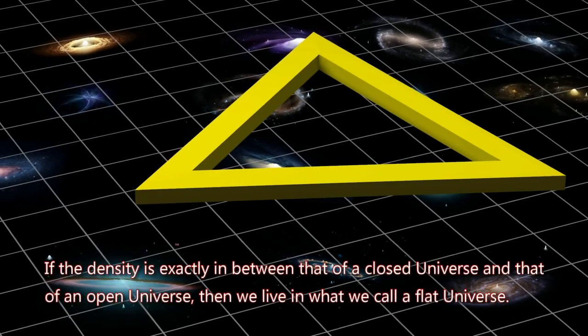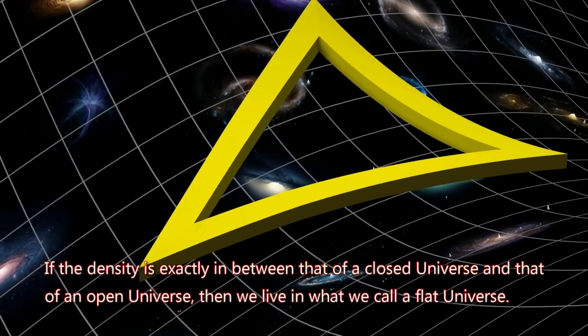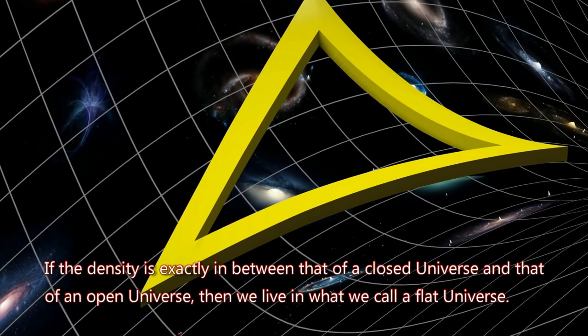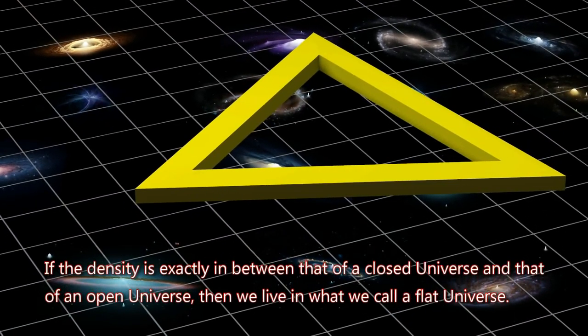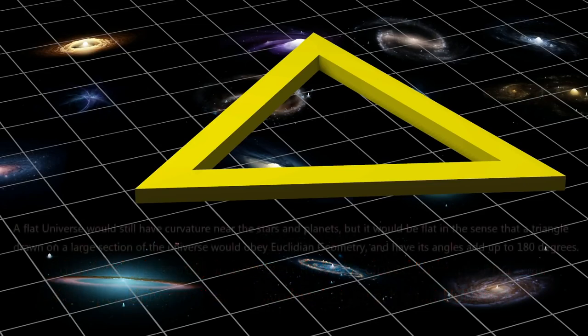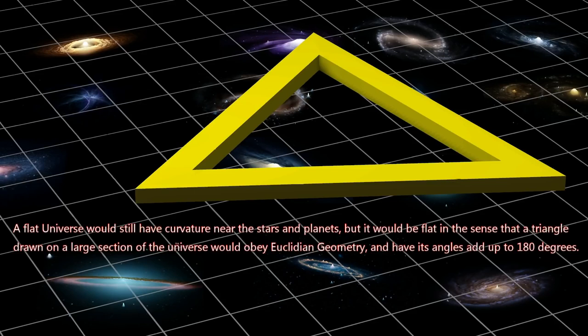If the density is exactly in between that of a closed universe and that of an open universe, then we live in what we call a flat universe. A flat universe would still have curvature near the stars and planets, but it would be flat in the sense that a triangle drawn on a large section of the universe would obey Euclidean geometry, and have its angles add up to 180 degrees.